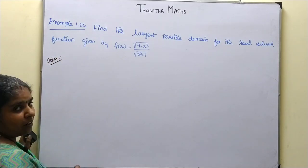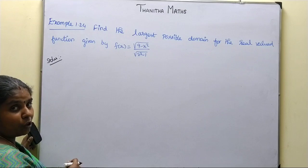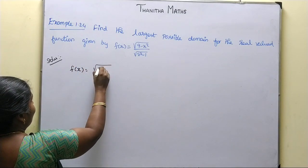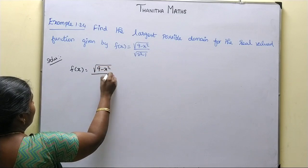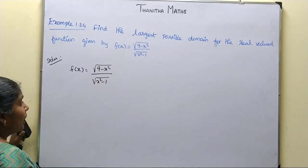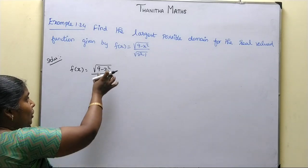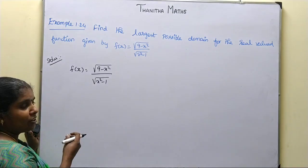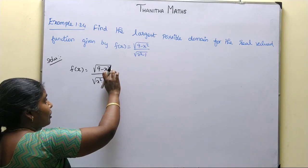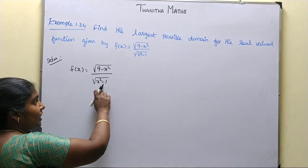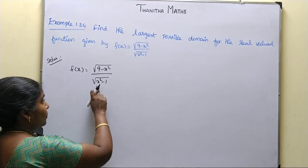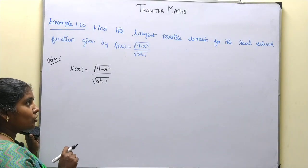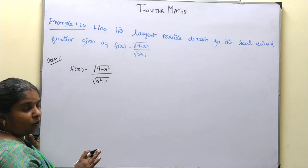We can define the domain. F(x) = √(9 - x²) / √(x² - 1). Square root of negative values gives imaginary numbers, so we will omit those. Also, denominator equal to zero makes the function undefined — infinite — so we will omit those values too.